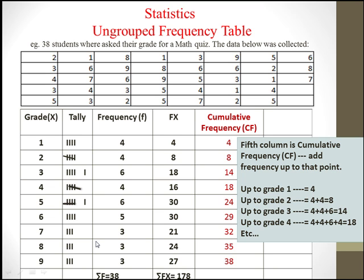The fifth column is cumulative frequency — you add the frequency up to that point. Up to grade one the cumulative frequency is four. Up to grade two it is four plus four, which is eight. Up to grade four, adding all frequencies, that's eighteen. Up to grade five that's twenty-four. Up to grade seven that's twenty-nine, then thirty-two, and so on.